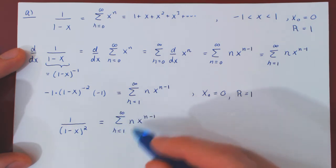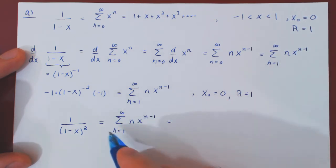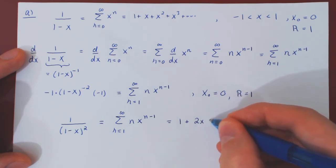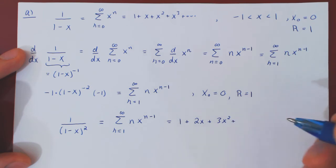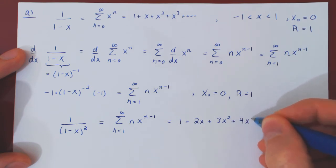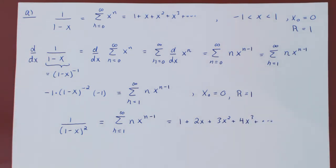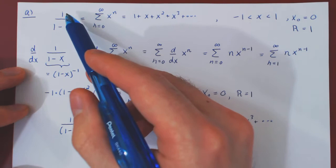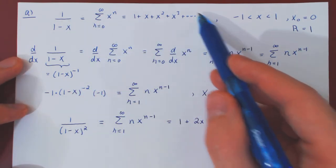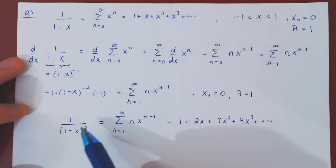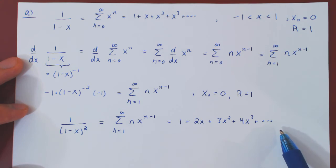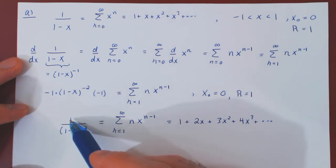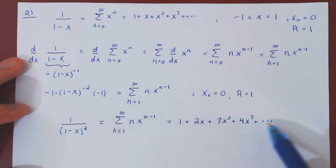Expanding the first few terms: when n equals 1 we get 1, plus when n equals 2 we get 2x, plus when n equals 3 we get 3x squared, plus when n equals 4 we get 4x cubed, and so forth. With term-by-term differentiation, we expressed another simple rational function as a power series, valid only on the open interval from negative 1 to 1.